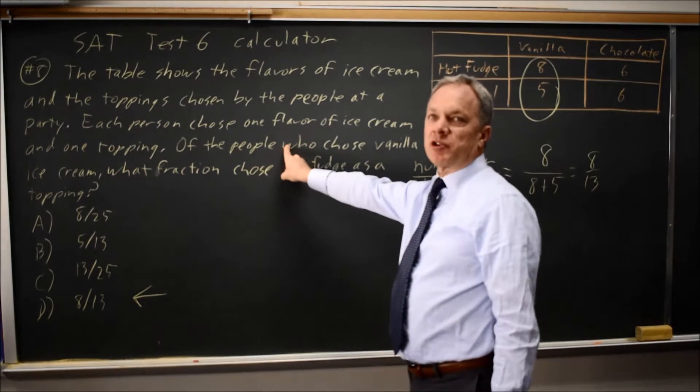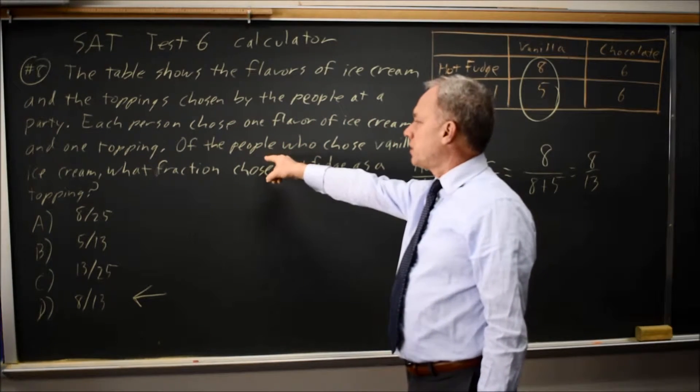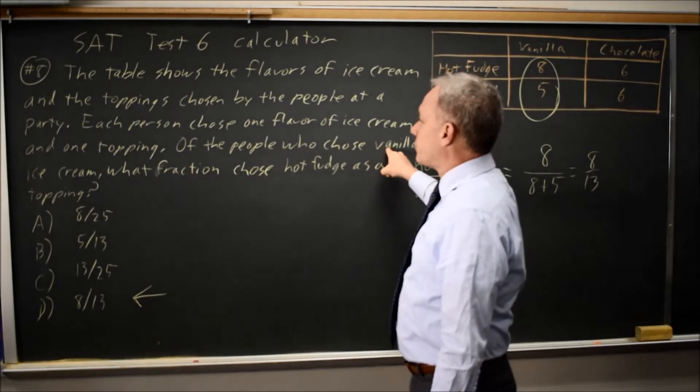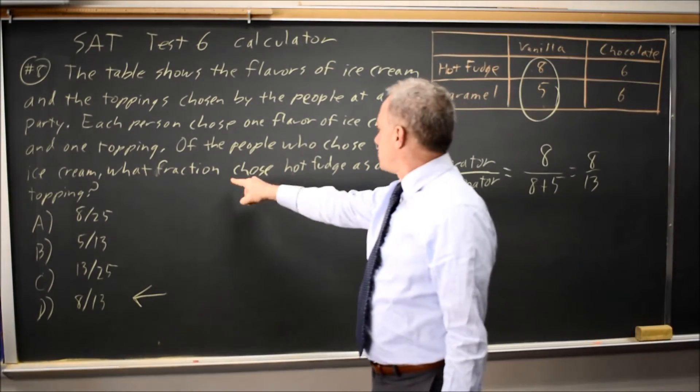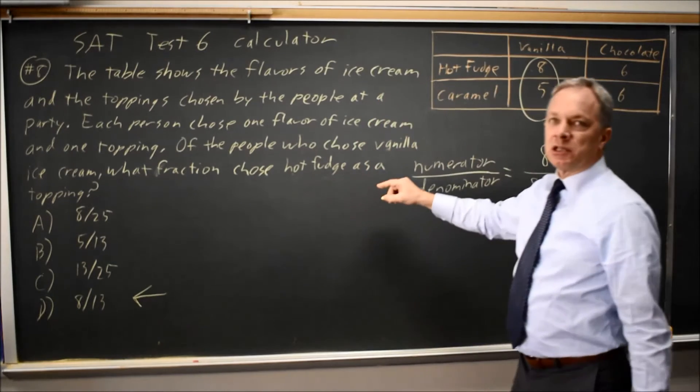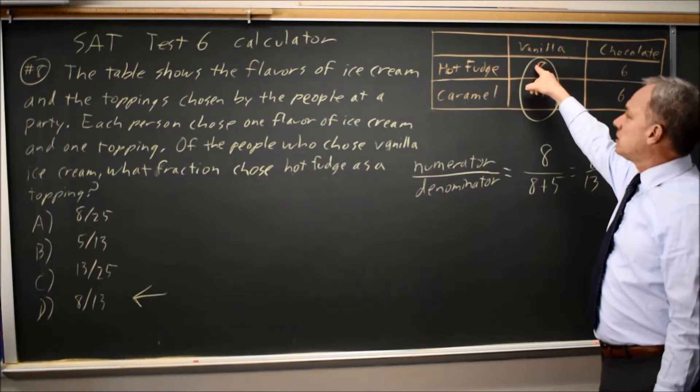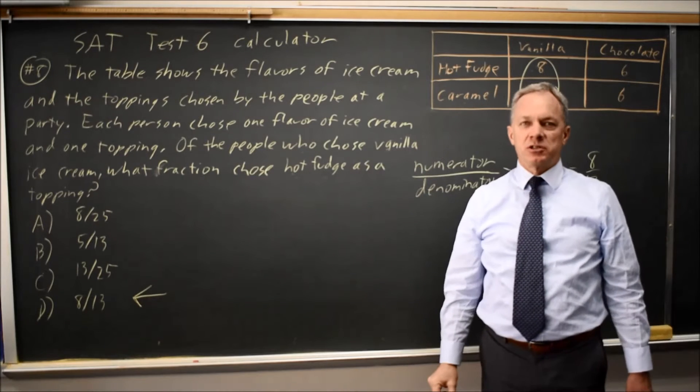We read once more to make sure we've correctly identified our numerator and denominator. The denominator of the people who chose vanilla ice cream, that's these 13, so it's correct. What fraction chose hot fudge as a topping? The hot fudge among vanilla, that's only these 8, so it should be 8 over 13, which is what we chose.